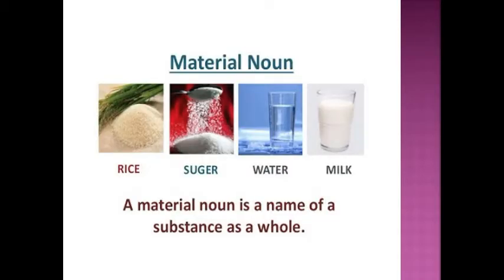Now let's see what material nouns are. A material noun is the name of a substance as a whole. Example: rice, sugar, water, milk, table, bag, laptop, etc.